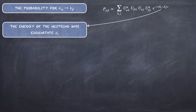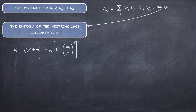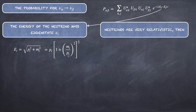What is the energy of the neutrino mass eigenstate ν_i? The energy E_i equals √(p_i² + m_i²), which we write as p_i times √(1 + m_i²/p_i²). Since neutrinos are very relativistic, we can use an approximation.